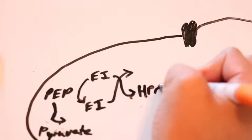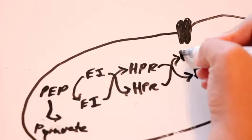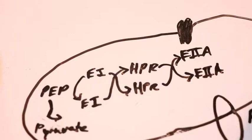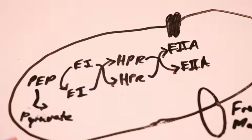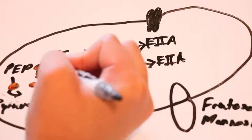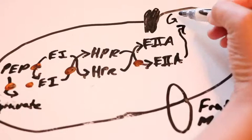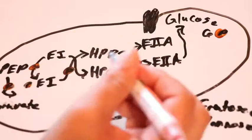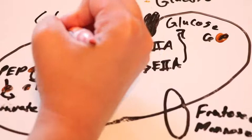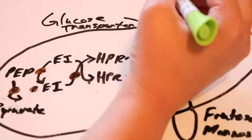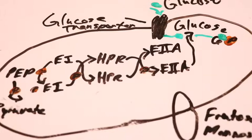So the PEP or phosphoenolpyruvate is going to pass its phosphate group to enzyme 1, and then from enzyme 1 it's going to pass to HPR, from HPR to enzyme 2A. And enzyme 2A is going to bind to glucose-6 inside the bacteria cell, giving it energy. So the bacteria depends heavily on glucose first to get the energy instead of any other sugar.